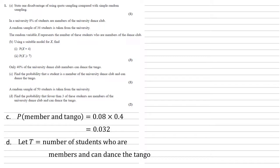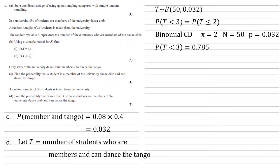So we're going to let T equal the number of students who are members and can dance the tango. And T is going to be modeled by a binomial distribution because we're still looking at our probability here. Our sample size is 50 and our probability is the 0.032 that we just worked out in part C. We want the probability that fewer than three. Well, this is the same as less than or equal to two. So again, we're going to use our calculator with the binomial CD. X is equal to two because that's what we're going smaller than or equal to. N is 50 and our probability is 0.032. Putting them into the calculator gives us an answer of 0.785.